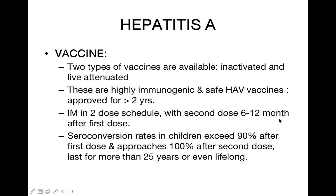Should we routinely vaccinate in developing countries? The answer is no, because almost 100% of children have already gotten this disease, often subclinically. These vaccines are mainly given in developed countries where the incidence and prevalence is very low.